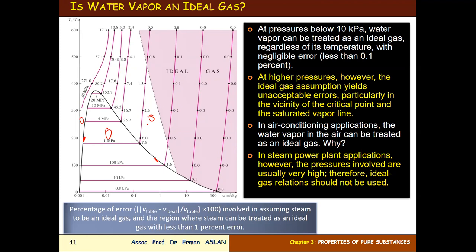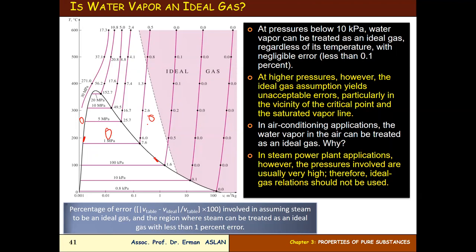At pressures below 10 kilopascal, water vapor can be treated as an ideal gas regardless of its temperature, with negligible error less than one percent. This means that at low pressures, water vapor behaves as an ideal gas.